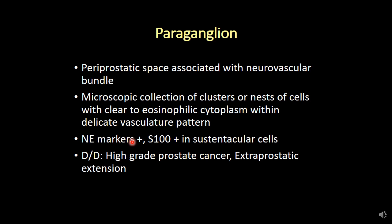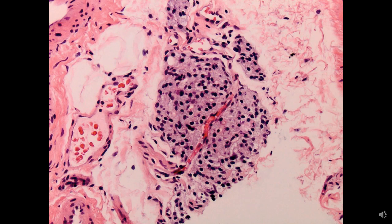The typical differential diagnosis to avoid is high grade prostate cancer and extraprostatic extension. Here is a nice example in needle biopsy — you see a collection of these cells in a delicate vascular pattern within fat space, very easy to over-interpret as extraprostatic extension and high grade prostate cancer.